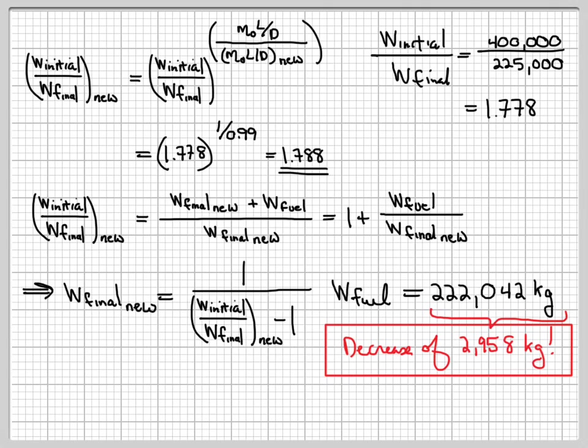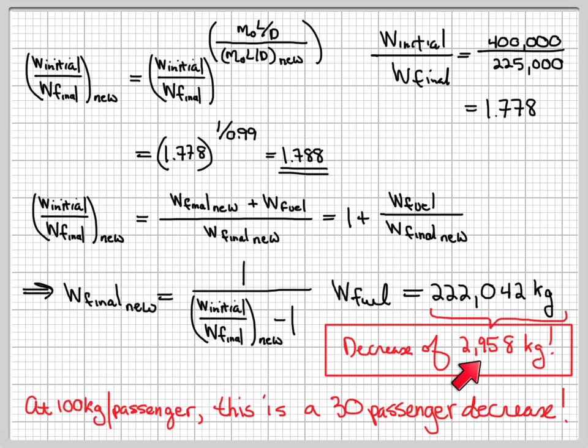We said that each passenger brings on a weight of about 100 kilograms between the passenger's weight and the luggage they carry. So at 100 kilograms a passenger, that means I need to carry 30 less passengers. I can divide 2,958 by 100, so I get 29.58, but I'm not going to take 0.58 of a person, so I'm going to have 30 passengers less.